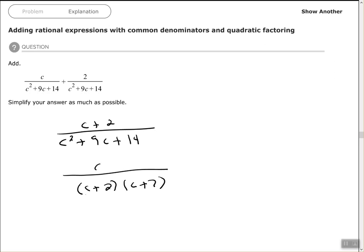And you see, when we have it in this factored form, we have a common factor of c plus 2 in the numerator and c plus 2 in our denominator. That will cancel each other out.